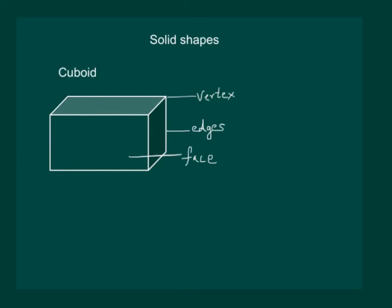We can compare a cuboid to a room. Then we have four walls, the roof, and the floor. Hence, a cuboid has six faces. If we count the vertices, we get eight vertices, and we have twelve edges.